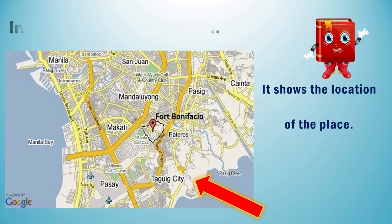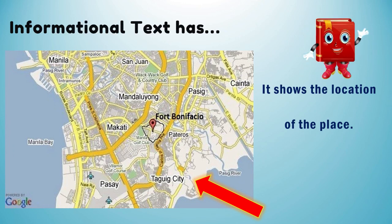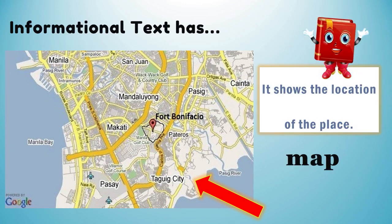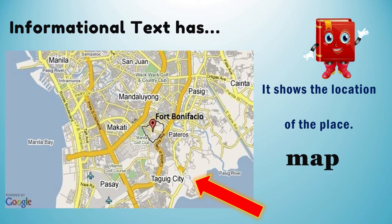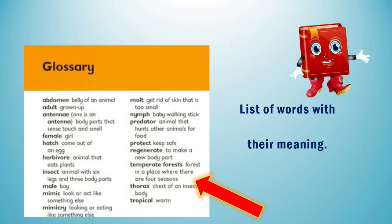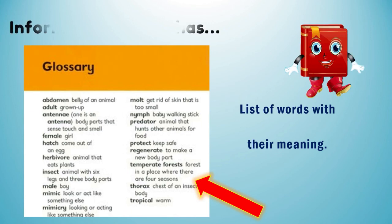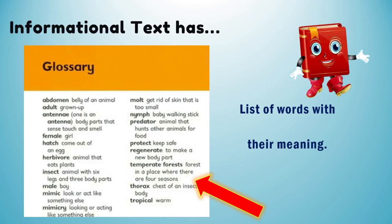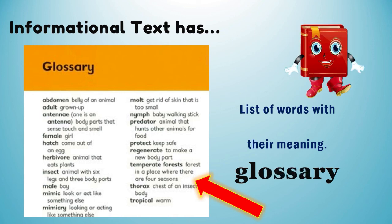Then, we have the map, which shows the location of a place. Informational text also has a glossary — it is the list of words with their meaning.